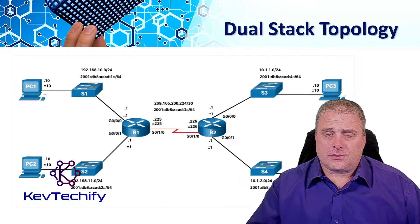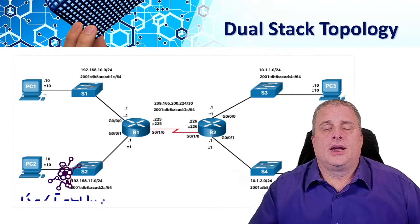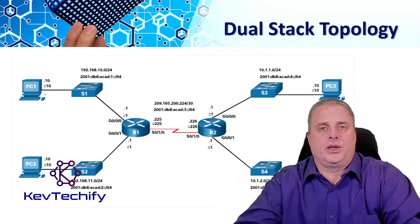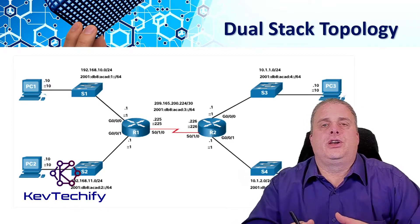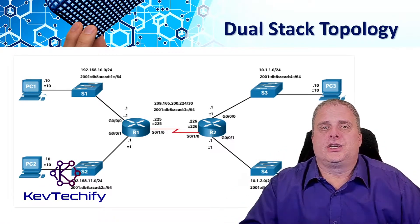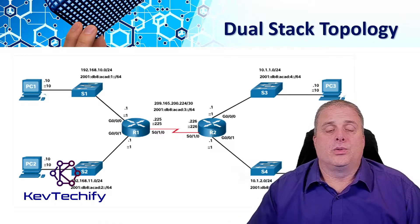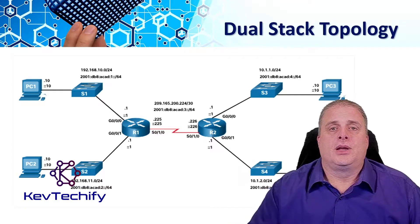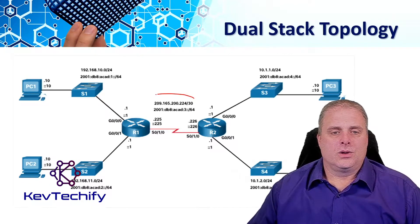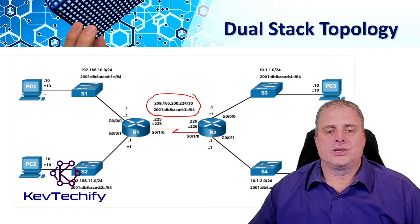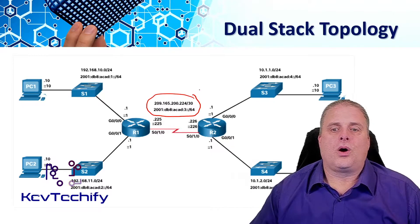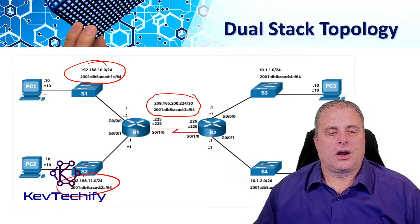A lot of today's networks run a dual stack. IP version 4 addresses are limited and we don't have more of them, while IP version 6 is coming in — many companies, businesses, and governments are starting to use IPv6 as the new IP technology. To help with the transition, a lot of companies are running what we call a dual stack topology, where they run IPv4 and IPv6 at the same time. When you look at a topology, you'll see both listed: here in the center for our WAN connection, we have an IPv4 network address and an IPv6 network address. All five of these networks are running dual stack.